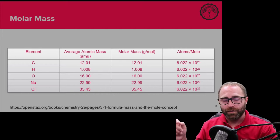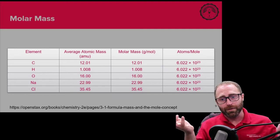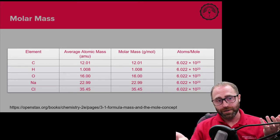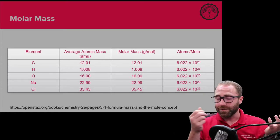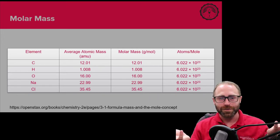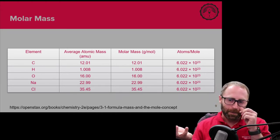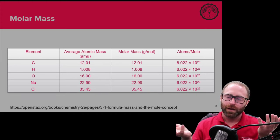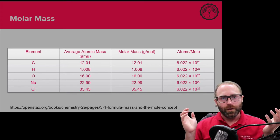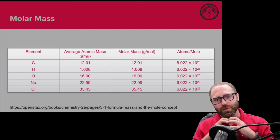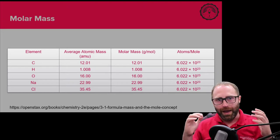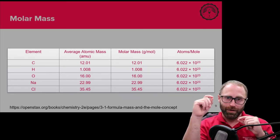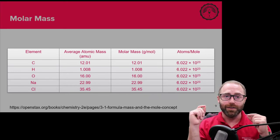We have the same number of atoms of hydrogen as we do of carbon, even though we have different masses. That's because carbon has many more protons and neutrons than hydrogen — that's why the molar mass changes. Electrons are so small that gaining or losing one doesn't appreciably change the atomic mass. If you count them one-to-one, the number of atoms of carbon and hydrogen would be exactly the same, even though the masses differ.